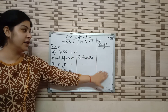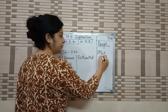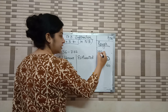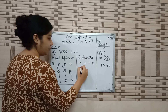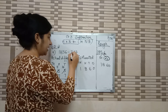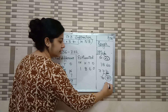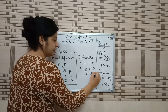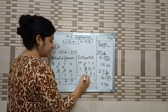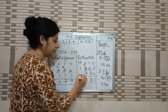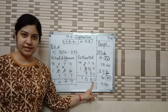Now we round off for estimation. 1856 — at the tens place we have 5, so it can be 50 or 60. Since 6 is there, we round off to 60. The hundreds and thousands places stay as it is, no change. So the rounded number is 1860. Now check: 79 rounded to nearest tens — 70 or 80? We round to 80. So 80 is the estimated answer.